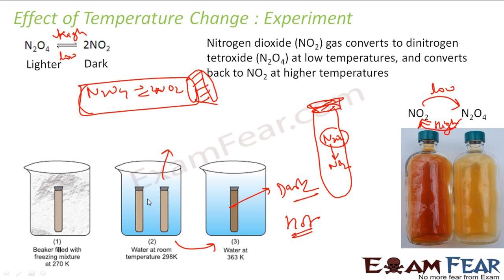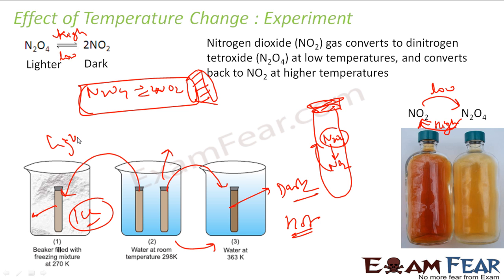Similarly, taking the room temperature test tube and placing it in ice — very cold — whatever NO2 was present becomes N2O4, and N2O4 is light. So the color of this test tube becomes lighter. So you had two test tubes which had N2O4 and NO2 in equilibrium. The moment you shift a test tube to higher temperature, it becomes darker because NO2 is formed. If you cool the same system, it becomes lighter because at low temperature, N2O4 is formed. So we can say that the change in temperature impacts the equilibrium.